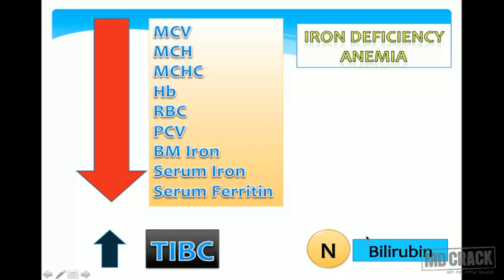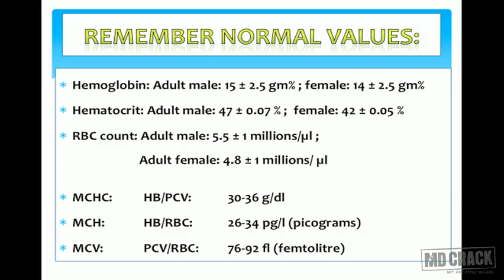Remember this key summary: in iron deficiency anemia, MCV, MCH, MCHC, hemoglobin, red cell mass, hematocrit, bone marrow iron content, serum iron, and serum ferritin are all reduced. Bone marrow iron graded 0 to 3 will be zero. The only parameter raised is TIBC — total iron binding capacity — more than 450 micrograms per deciliter. Bilirubin is normal, whereas it is raised in hemolytic anemias like thalassemia.